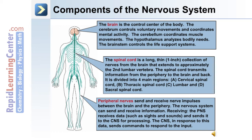The peripheral nerves send and receive nerve impulses between the brain and the periphery. When receiving, the peripheral nervous system receives data such as sights and sounds from the periphery and sends it to the central nervous system for processing. The central nervous system, in response to this data, can send commands or motor impulses to respond to that particular input.